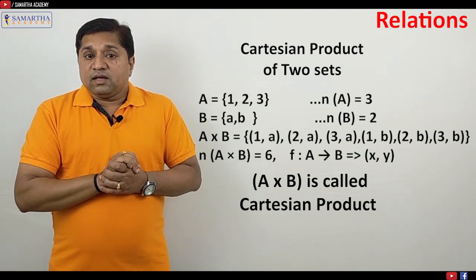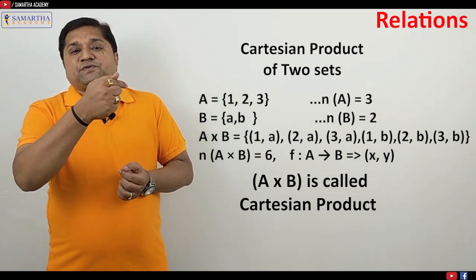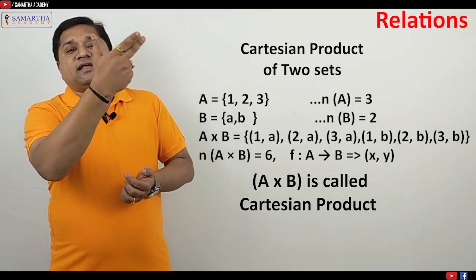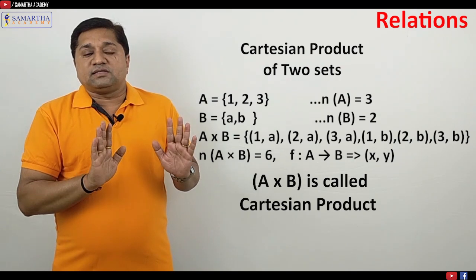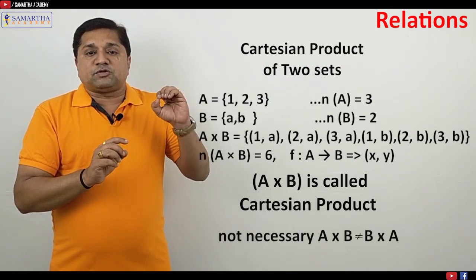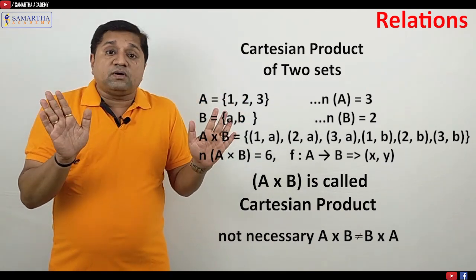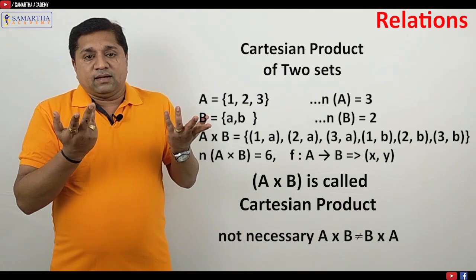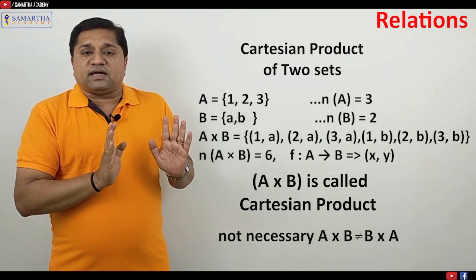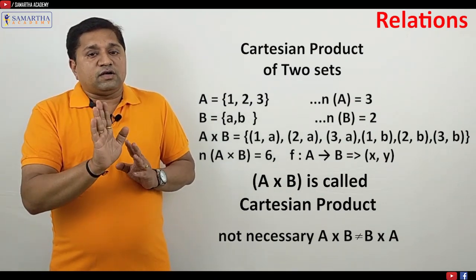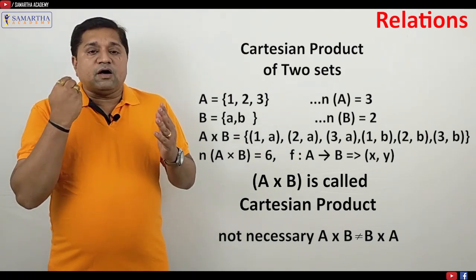Now remember, if I write B cross A, you have to take the elements of set B first, then the element of A. So A cross B is not equal to B cross A — these two sets are different. We can say A cross B is not necessarily always equal to B cross A. It may be equal only if A and B are the same set. When A and B are two different sets, A cross B is not equal to B cross A.